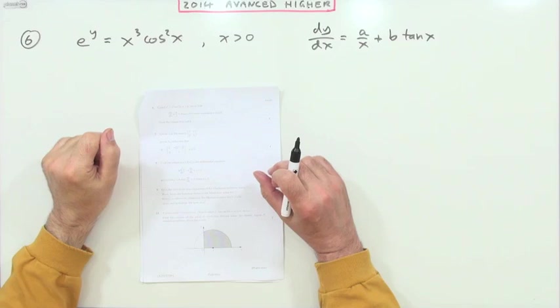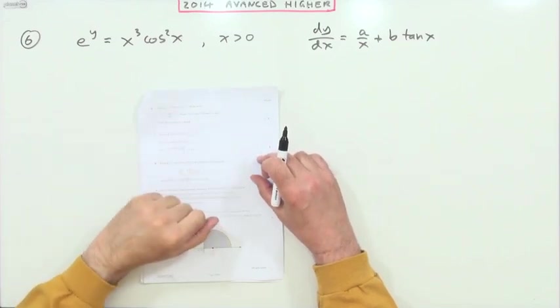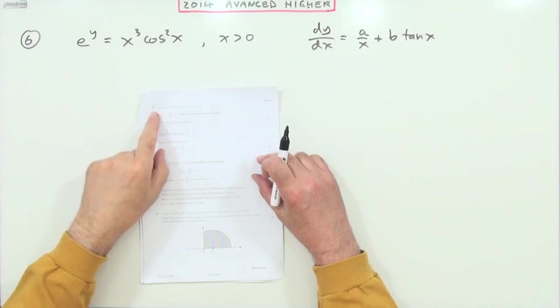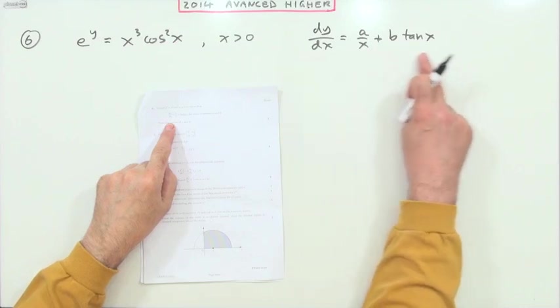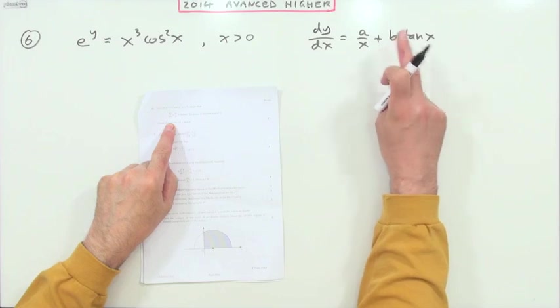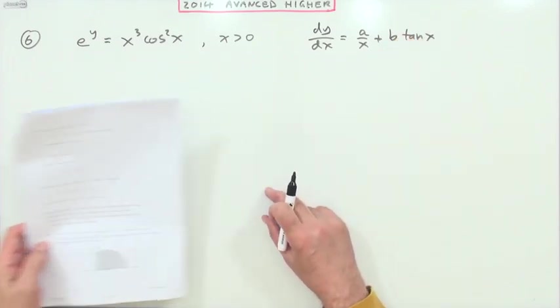Number six from the 2014 advanced higher: implicit differentiation. Given this, show that the first derivative dy/dx is equal to this statement and state the values of a and b. Now it's quite a short one, it's only three marks.